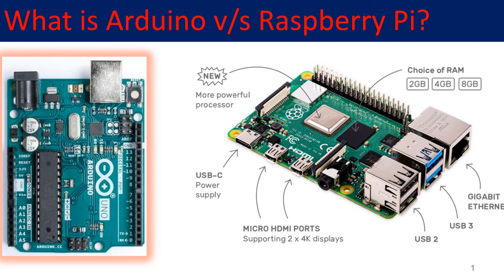Hello and welcome to this new video on the comparison between Arduino and the Raspberry Pi. In this video I am going to discuss the key differences between the Arduino Uno and the Raspberry Pi 4. There are several versions of Arduino and several versions of Raspberry Pi as well, like Arduino Uno, Arduino Omega, and similarly Raspberry Pi 2, Pi 3, and the latest Raspberry Pi 4. I'll cover how to program them, the tools used, key differences, and applications.